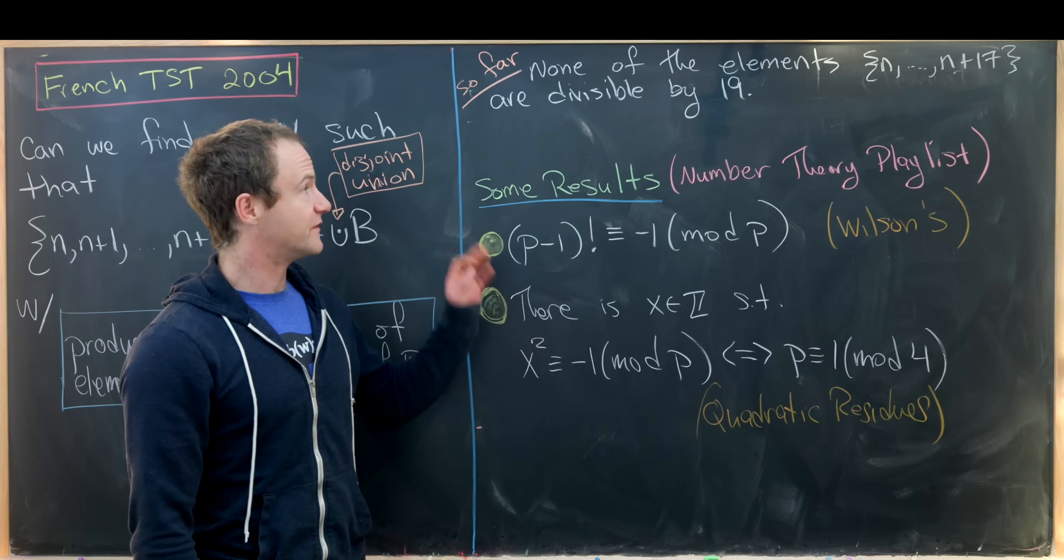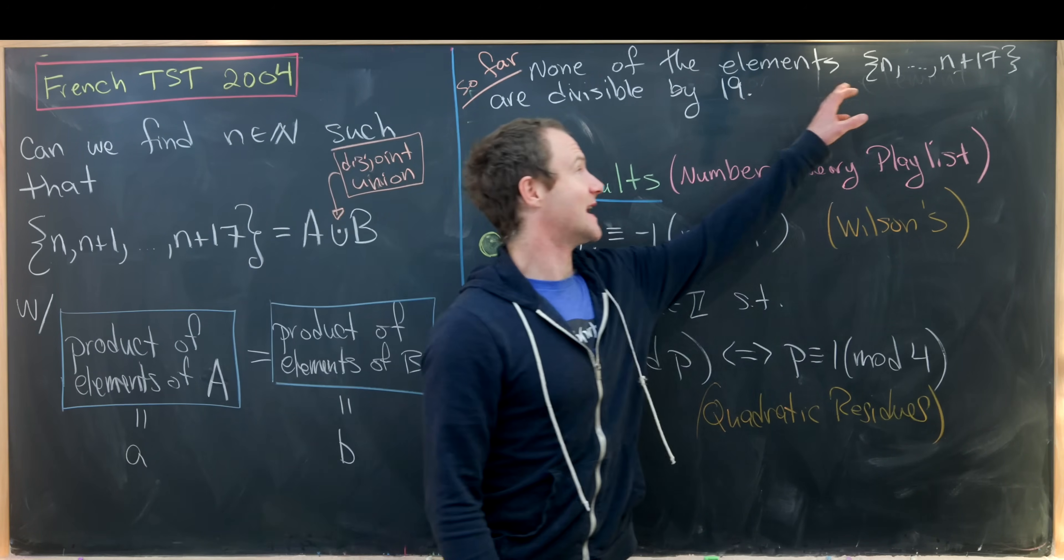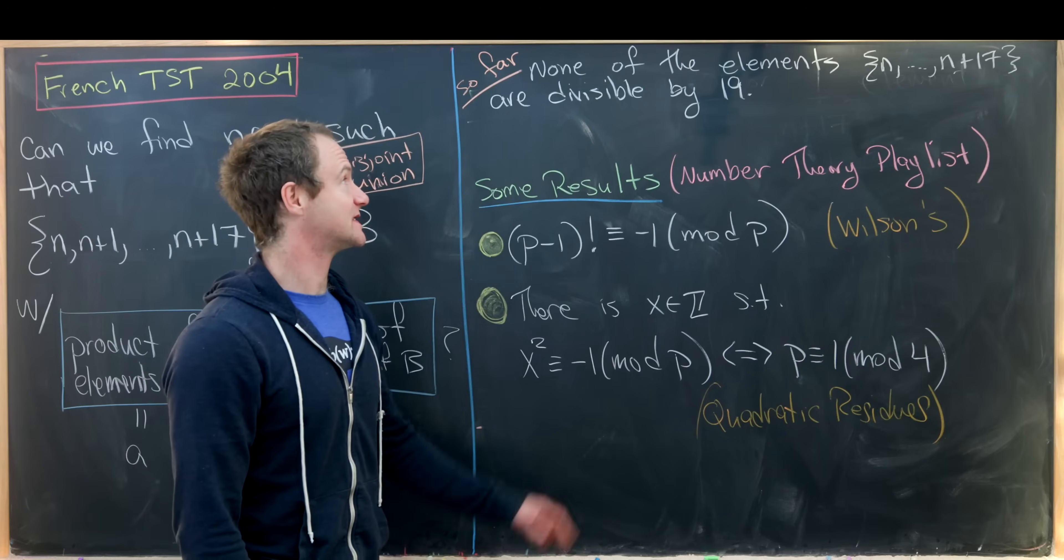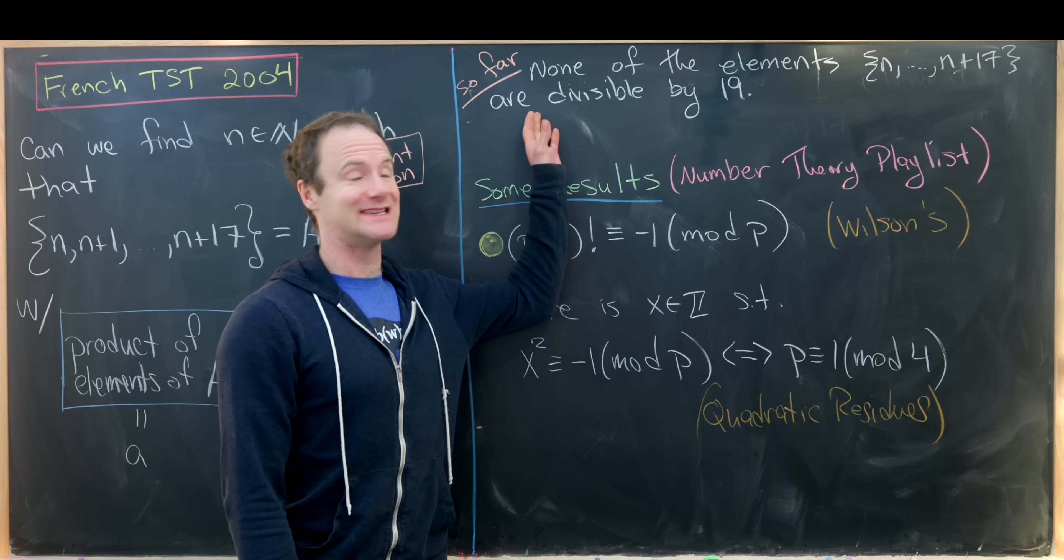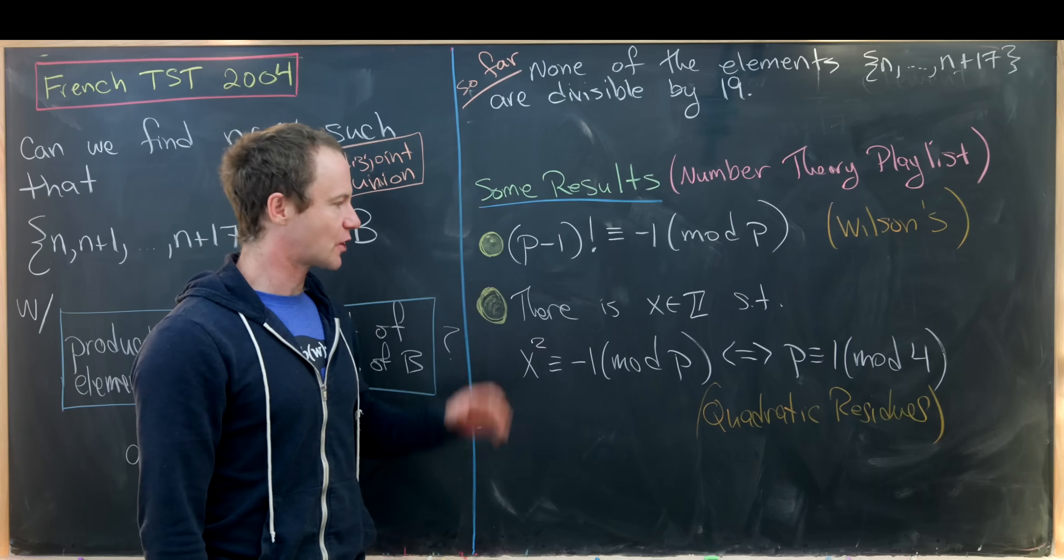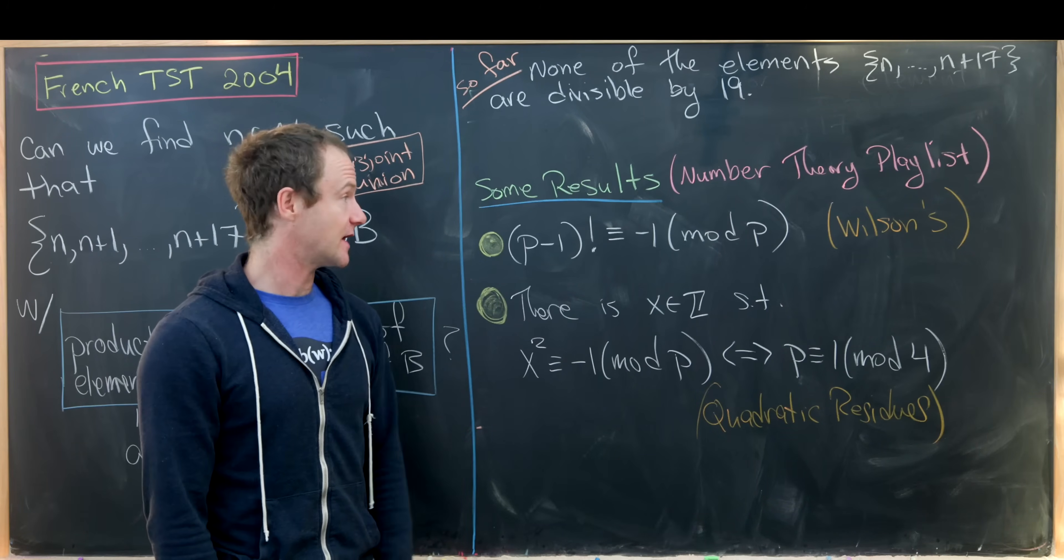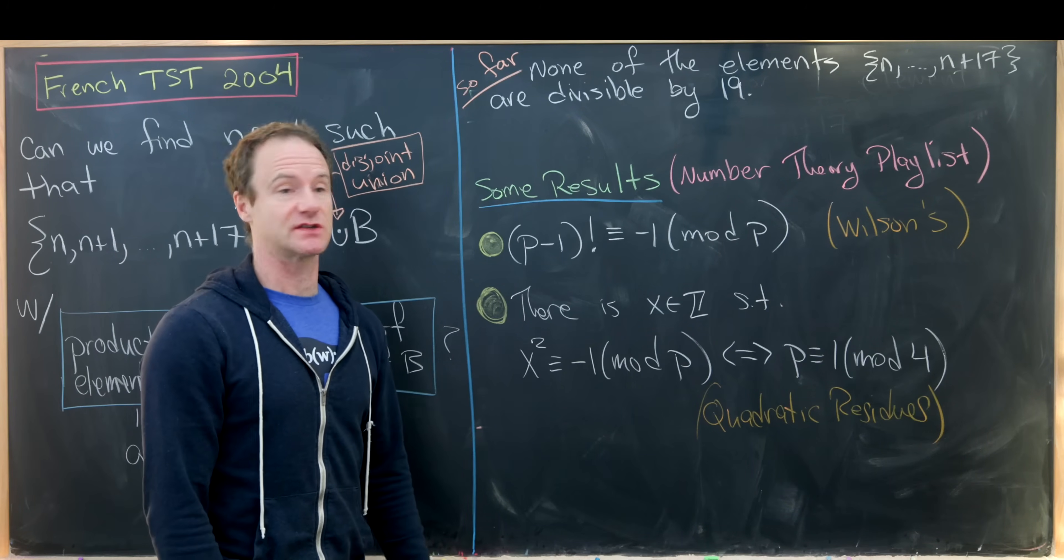So far, we've determined that in order for this to be possible at all, our set {n, n+1 up to n+17} cannot contain any elements that are divisible by 19. And now here's a quick review of some results, which you can find in my number theory playlist if you'd like, that we'll use to finish this solution.